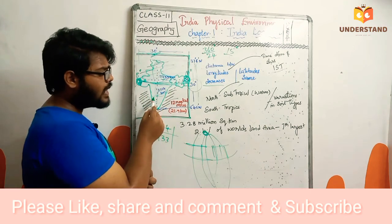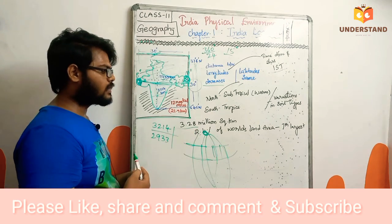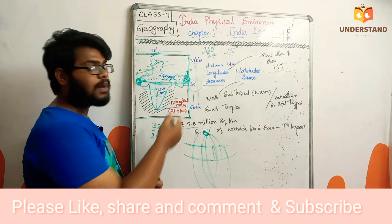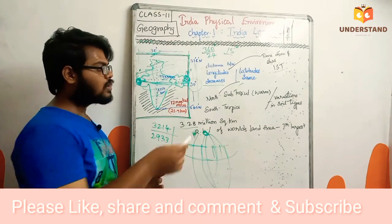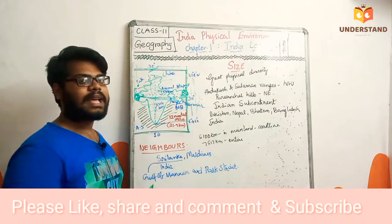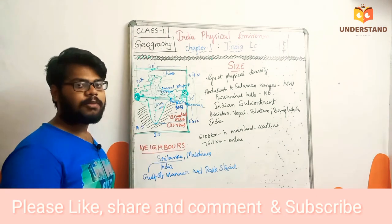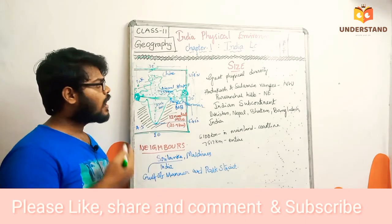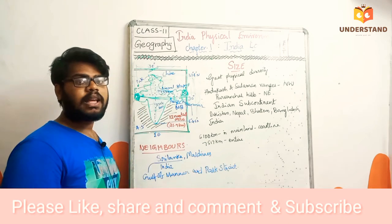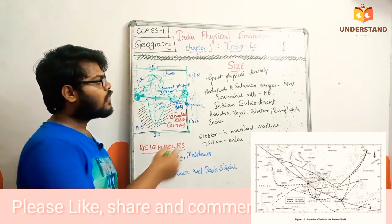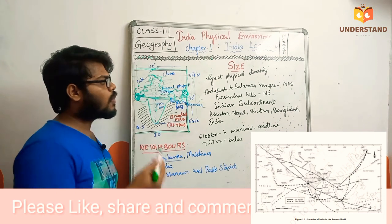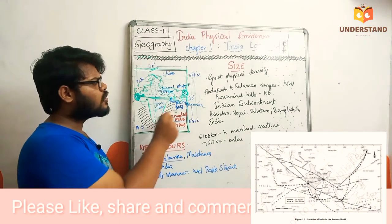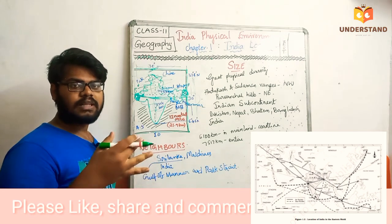Next, we are looking at the size of India. It is 3.28 million square kilometers, and this covers 2.4% of the total land area of the world. India is the 7th largest country in the world. India is a vast land and the Tropic of Cancer cuts through it, giving temperate and torrid zone variations with great physical diversity in our country. We have the Himalayan ranges to the north and west — the Hindukush and Sulaiman ranges.